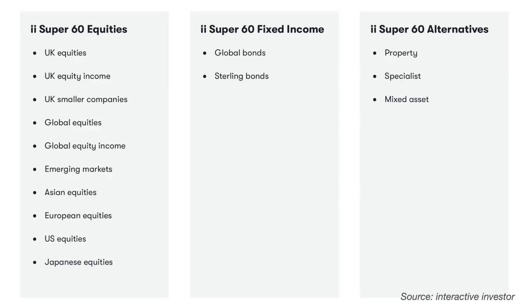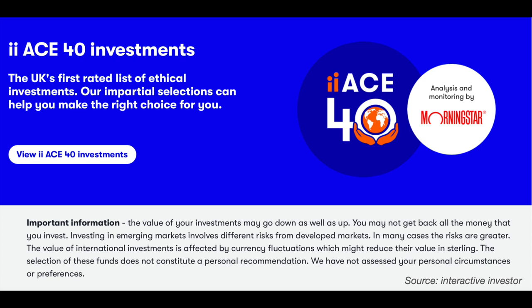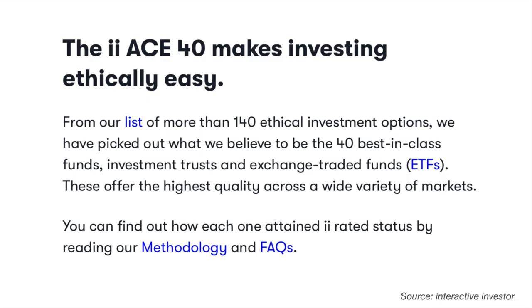More confident and experienced investors may want to choose their investments from the Super 60 list. The Super 60 helps narrow down the choice from literally thousands of investment options and is divided into three main groups: the II Super 60 equities, fixed income and alternatives — where alternatives include property, specialist and mixed asset. For those wanting to invest ethically, the ACE 40 is the UK's first rated list of ethical investments, and Interactive Investor has selected what they consider to be the top 40 best-in-class ethical investment funds, investment trusts and ETFs.